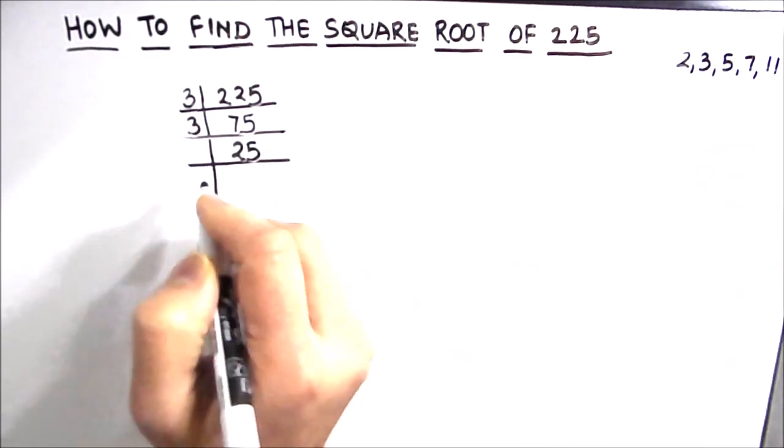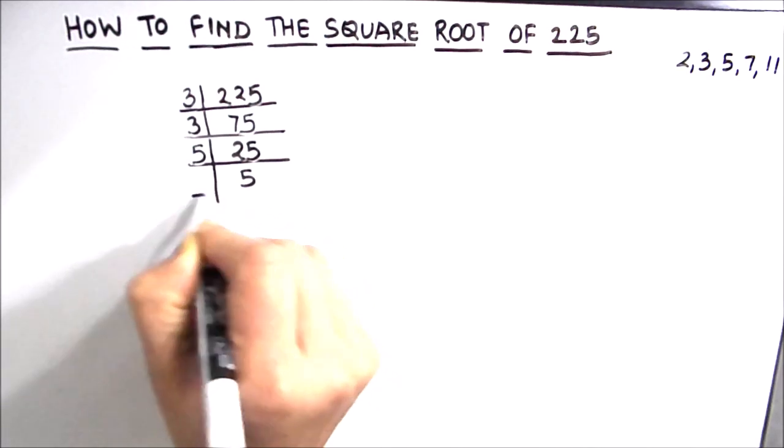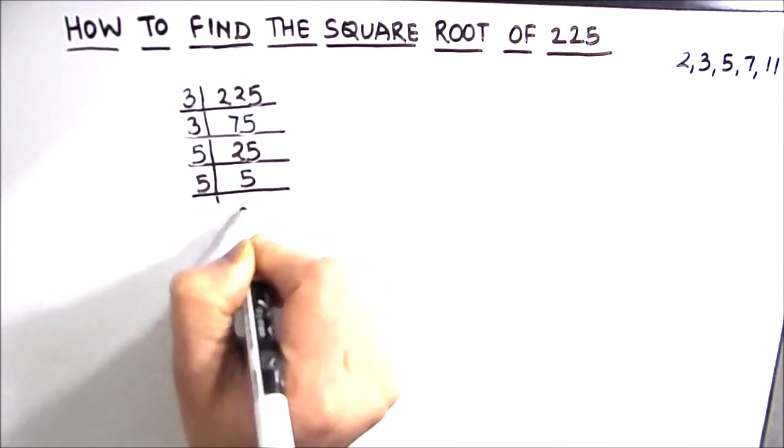Now 25 is divisible by the next prime number which is 5. 5 times 5 is 25 and 5 times 1 is 5.